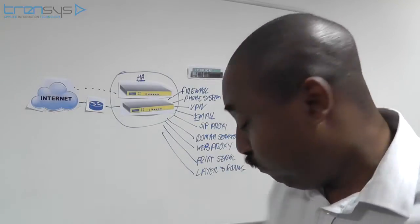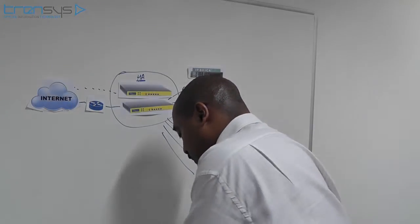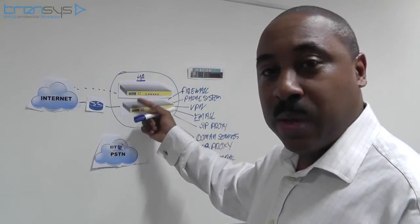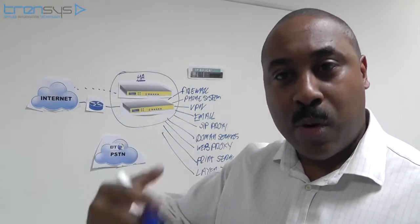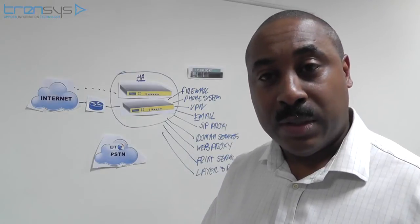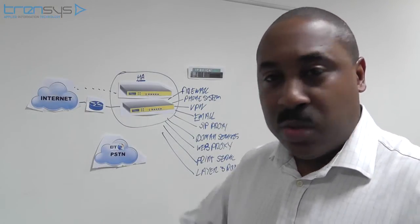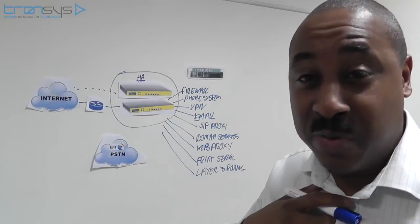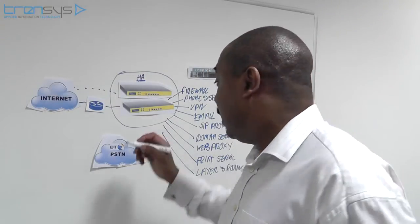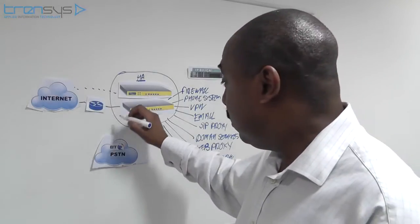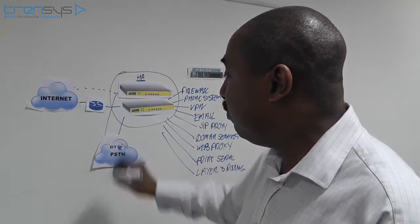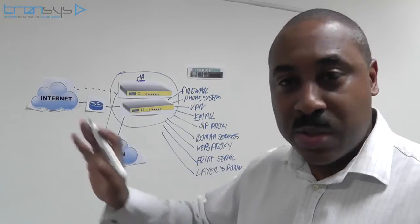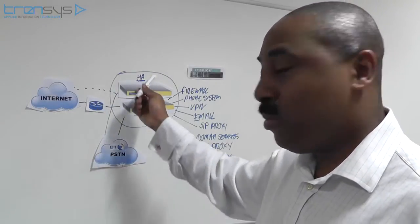There's one missing component — the BT network. These IP Brick appliances let you select what telephony cards you need. If you're using any telephony, whether it's ISDN, PSTN, or analog, you buy the cards you want: FXO, FXS. You can buy what cards you need and terminate them to the PSTN, so you can route calls wherever you need them — SIP, VPN.